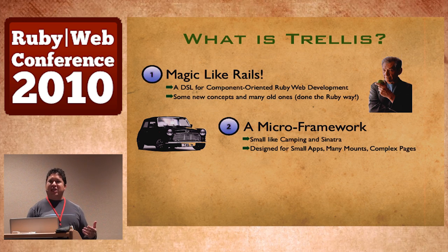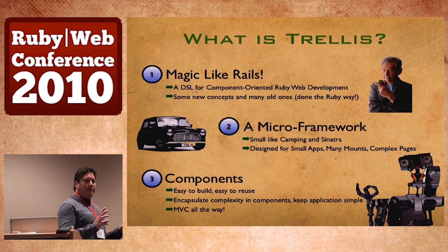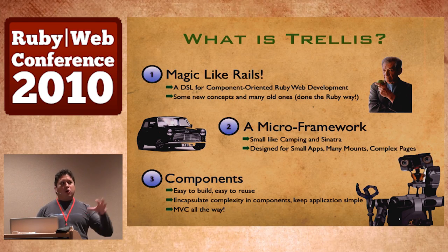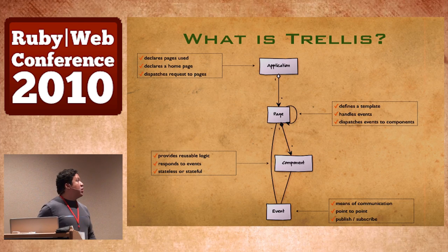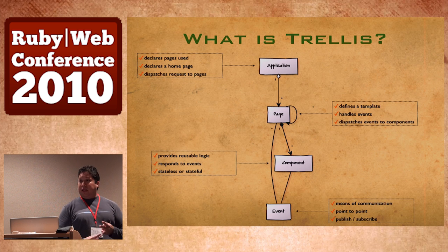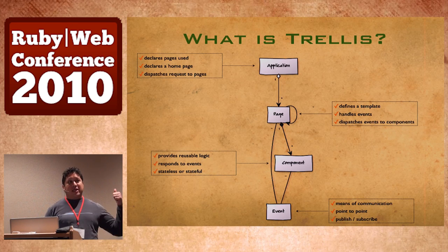Just like any Rack application, it's designed for small apps. Components are the main goal — they're supposed to be easy to build and encapsulate complexity. When something is too complex, you move it to a component. Components can be core framework components or custom components for your application. And it's MVC all the way — MVC at the application level and MVC at the component level. You have an application with pages, pages have components declared in the template. Components emit events, components consume events, pages consume events and dispatch events to components.